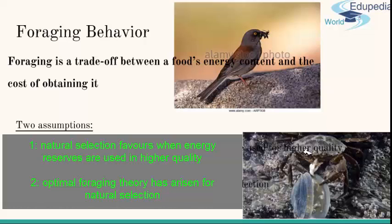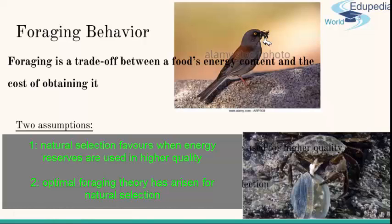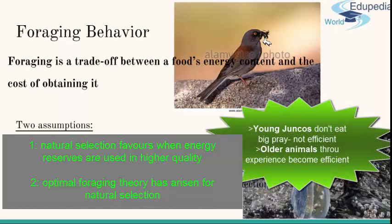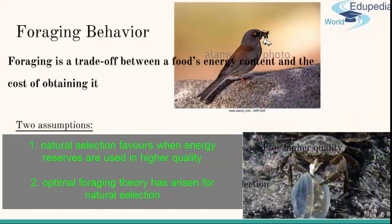Differences among individuals in foraging behavior may also be a function of age. For example, inexperienced yellow-eyed juncos — small North American birds — have not learned how to handle large prey items efficiently. As a result, the energetic costs of eating such prey are greater than the benefits, and they tend to focus on smaller prey. Only when the birds are older and more experienced do they learn to easily dispatch larger prey, which is then included in their diet. Natural selection may thus favor the evolution of foraging behavior that maximizes energy gained per unit time spent foraging.